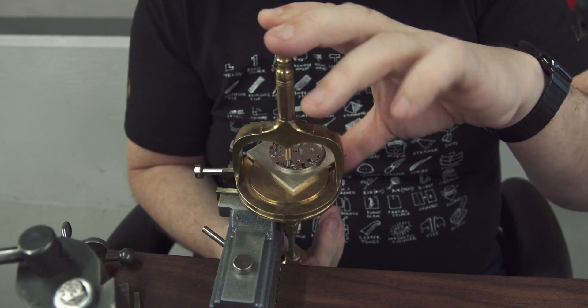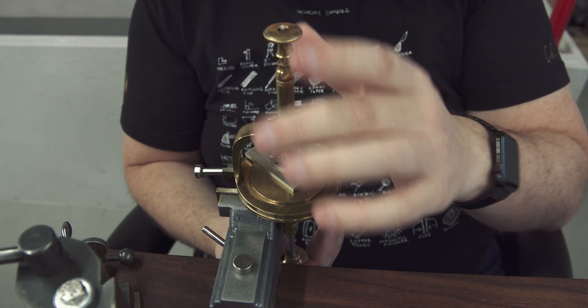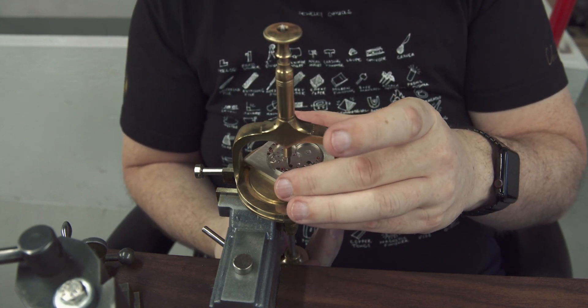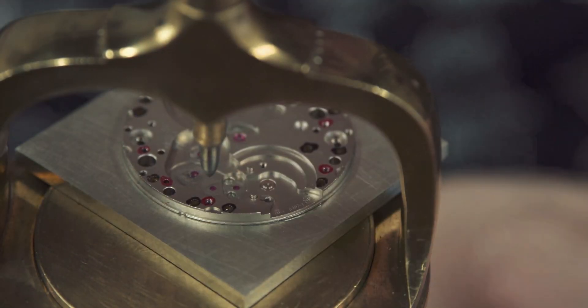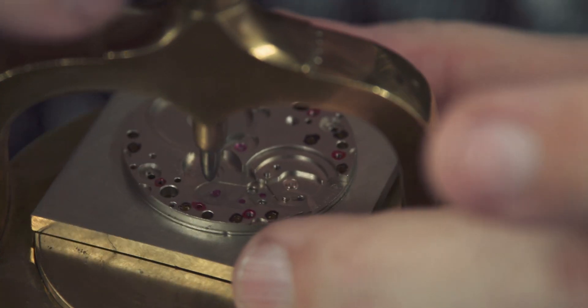The biggest advantage of this layout method is that I don't actually need to know what the dimensions are of where each of these holes are located. Because I have the existing main plate, I can just transfer those holes over onto the bridge material.